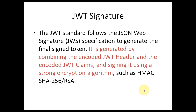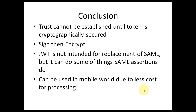The JWT signature, as the name explains, signs the JWT token. IETF provides a separate specification for this called JSON Web Signature. It uses the encoded JWT header and encoded JWT payload and signs them using strong encryption algorithms. This is required to identify two things: whether the token has not been tampered with, and the authenticity of the sender. For example, if Google signs it with their private key, you can verify it using Google's public key.